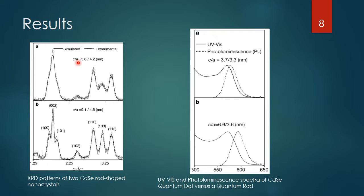The C to A ratio refers to the length of the C-axis versus the A-axis. In the top one it's a lot closer to a dot, with the axes more uniform in size. In the second one you're getting the elongation of the C-axis to make it more of a rod.